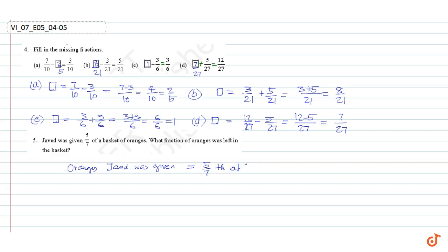Fraction left in the basket: 1 minus 5 by 7. Making the denominators equal we get 7 by 7 minus 5 by 7 is equal to 7 minus 5 divided by 7 equal to 2 by 7.